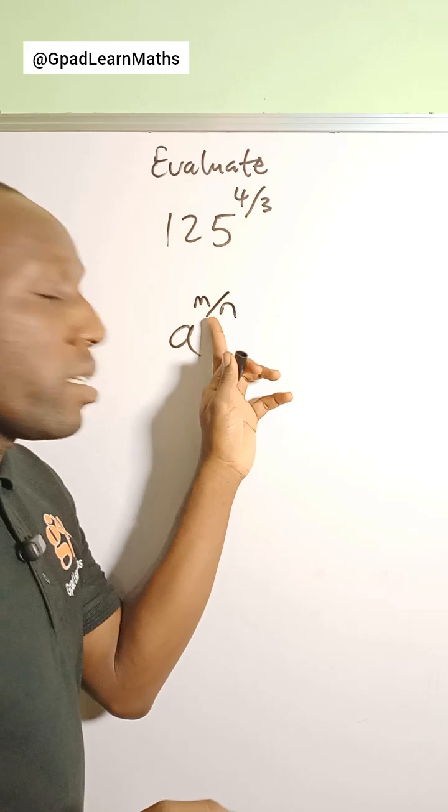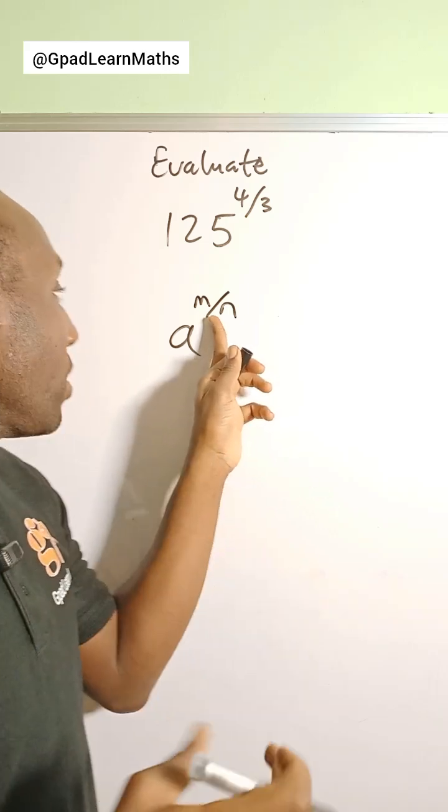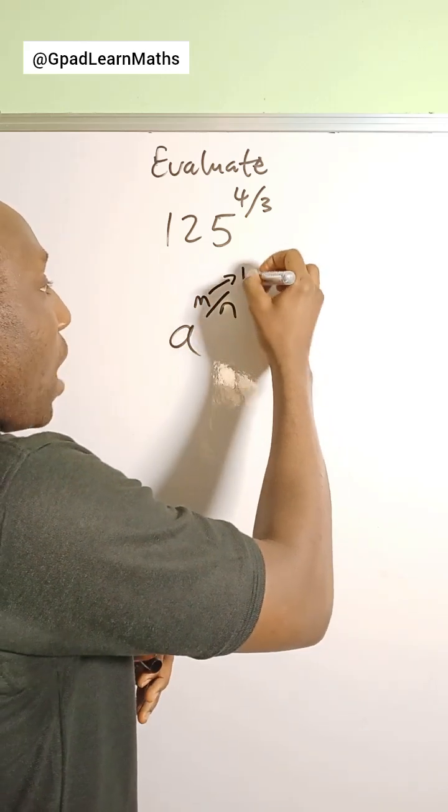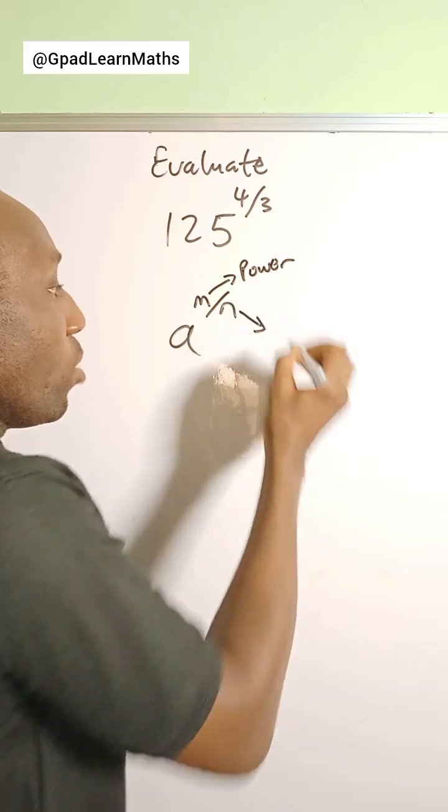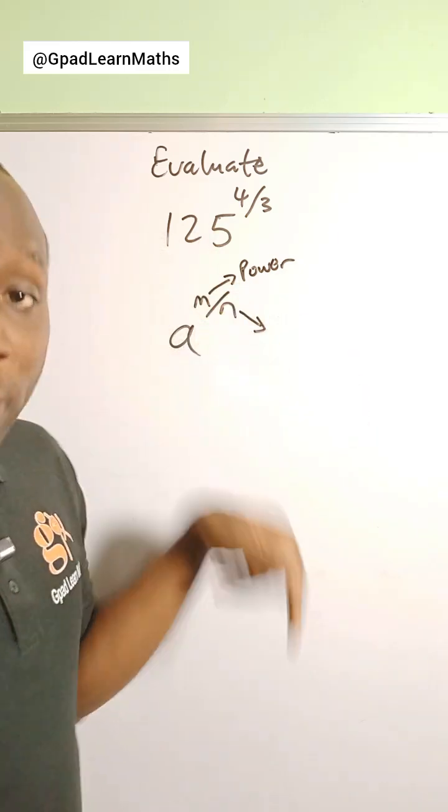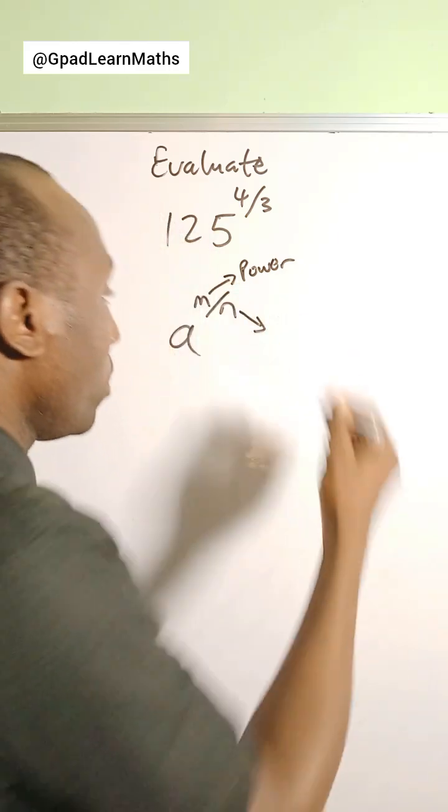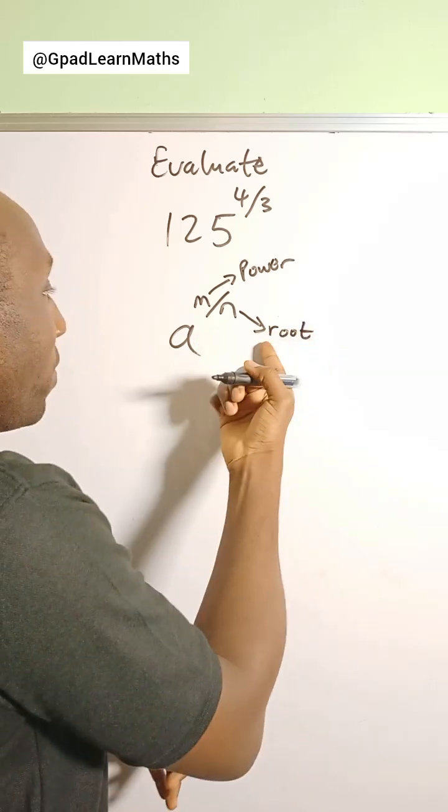Now this is a fractional index. This m here is the power, and n is the denominator. m is the numerator, n is the denominator, which is the root. So n is the root. Now if you have a term like this and you want to simplify it...